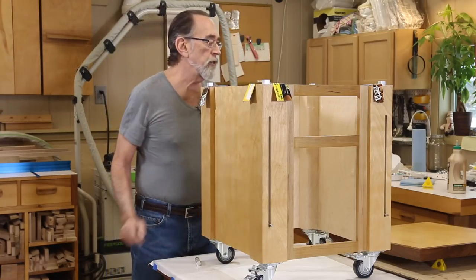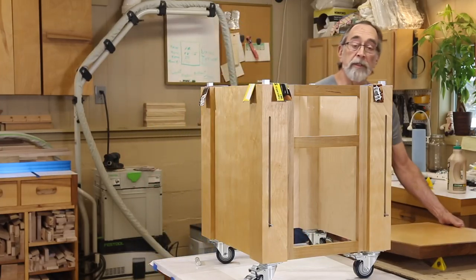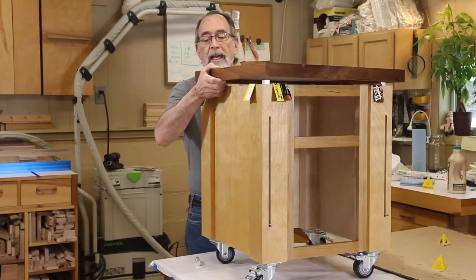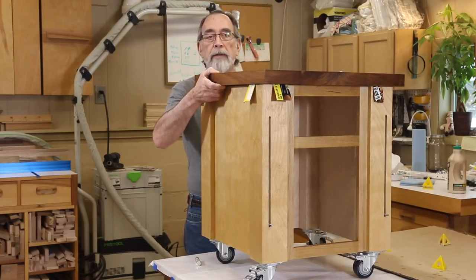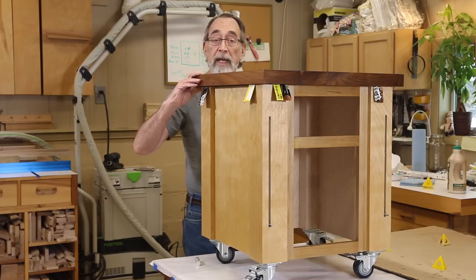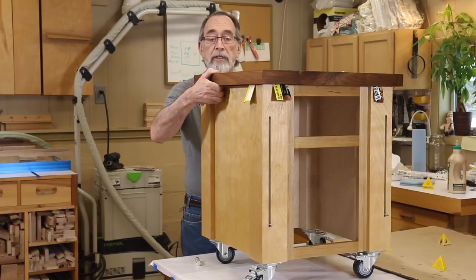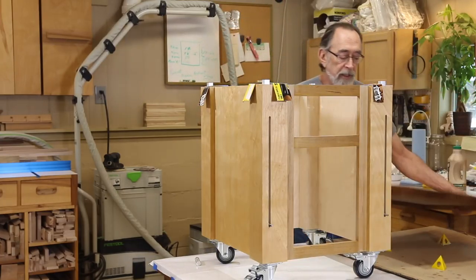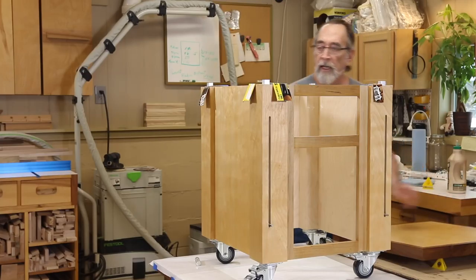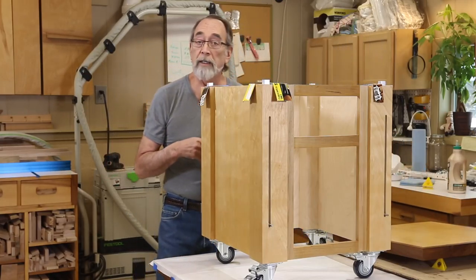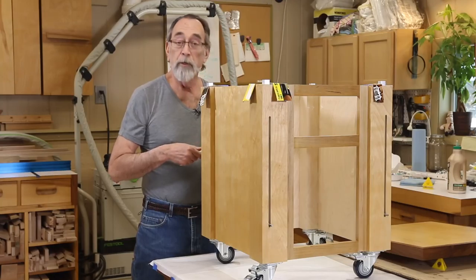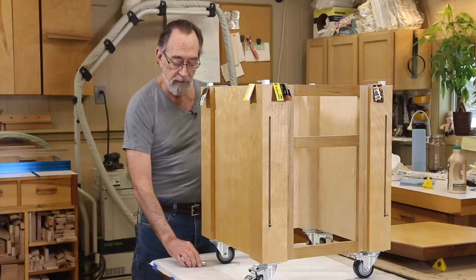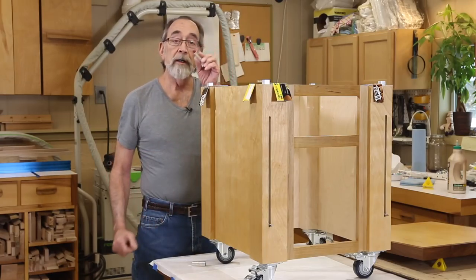When I put the top on, I won't be trying to figure out exactly where the correct location is. It should just drop down and nest in pretty much the right location. Now to mark the underside of this as to where we're going to cut these pockets, I'm going to use an old sheetrock trick for doing the cutouts on electrical boxes.